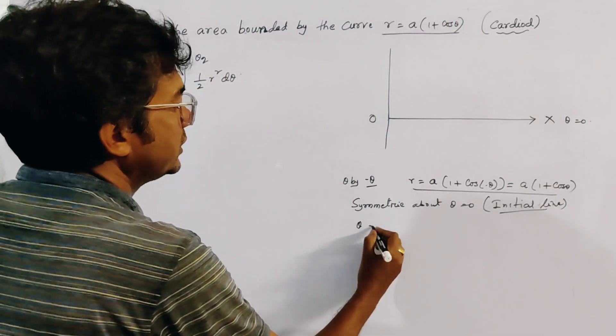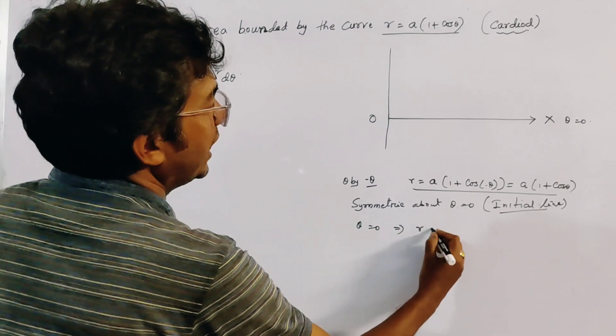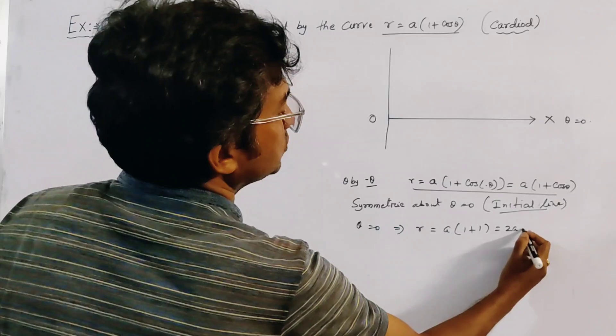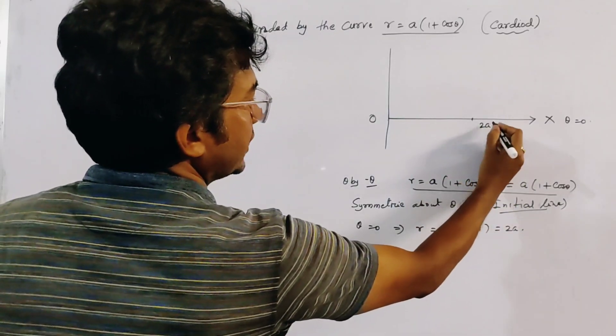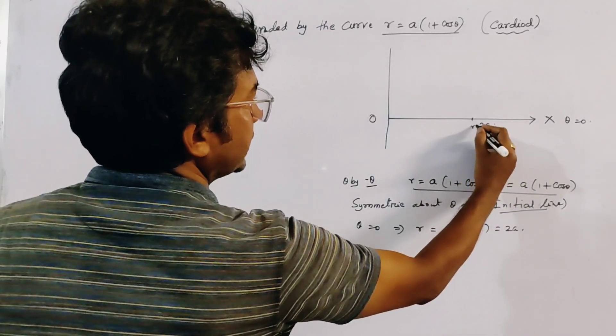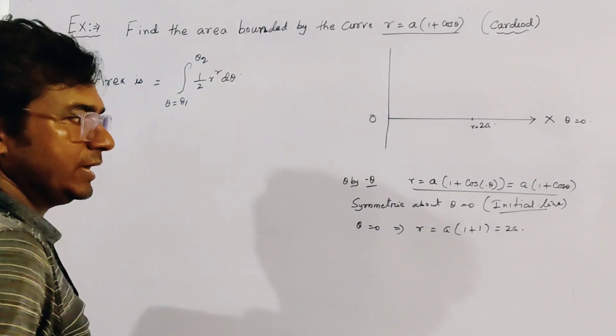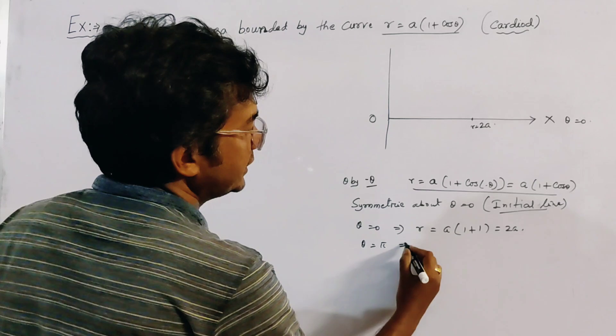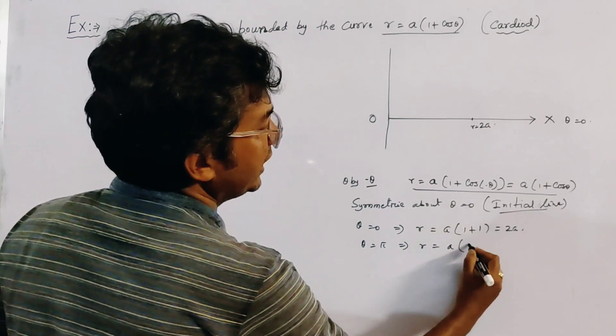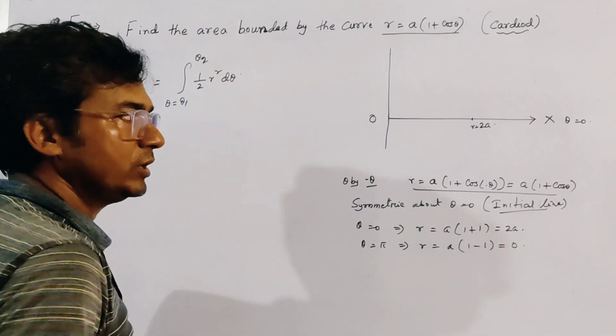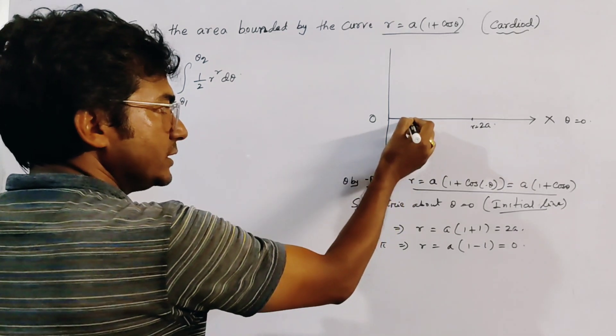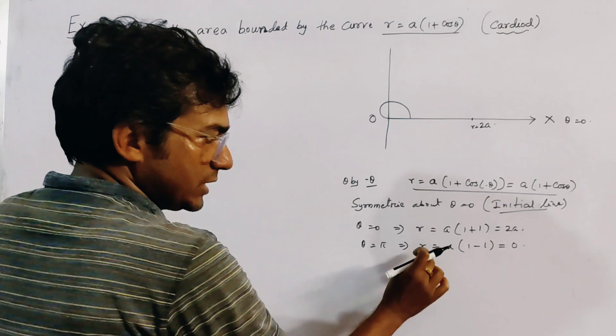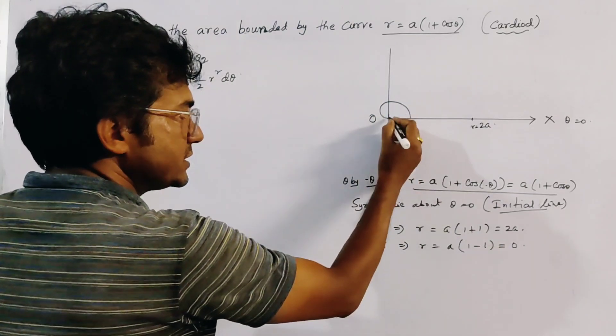Now if theta equal to 0, then R is given by A into 1 plus cos 0, which means 1, so this is 2A. And if we put theta equal to pi, then we get R equal to A into 1 minus 1, so this is 0. That is, when the angle of rotation is pi, then R becomes 0, and this is the pole.